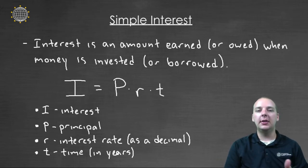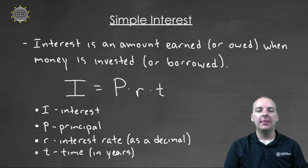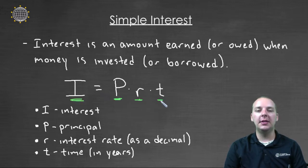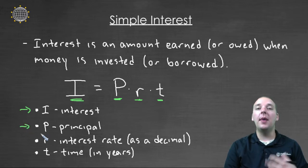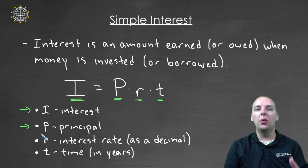It turns out there's a simple formula that governs what we call simple interest. It says that the interest earned is equal to P times R times T. I is obviously interest. P stands for principal — the amount of money that you're investing or borrowing.